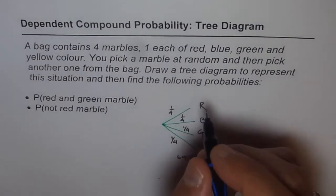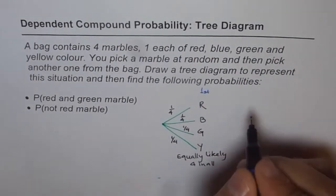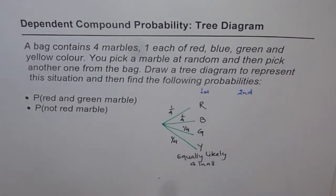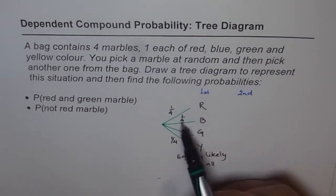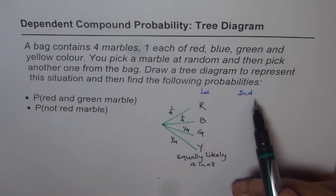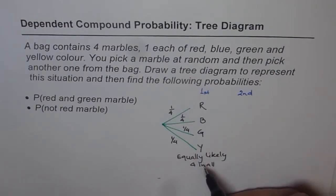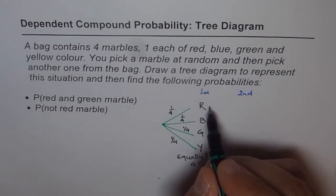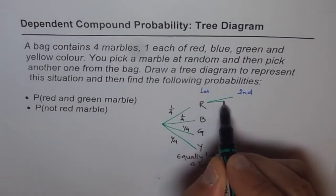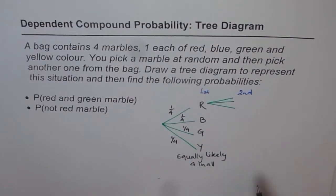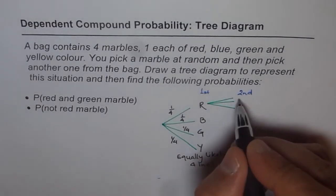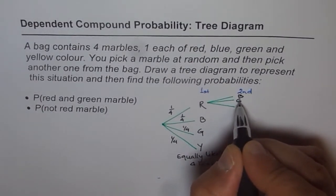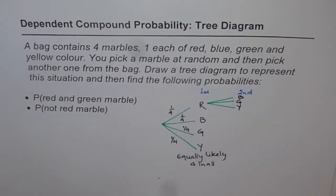Now for the second draw. If you picked red, you are not replacing it, so only three marbles remain. Second time from red, you could get either blue, green, or yellow — only three possibilities, since red has already been picked. So the possibilities are blue, green, or yellow.